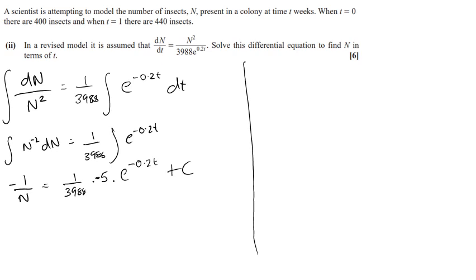The minus sign is important — because it's e^(−0.2t), differentiating back gives −0.2, which is −1/5, so we need to counteract that by multiplying by −5 outside. To find c, use t = 0 and n = 400 (the simpler initial condition). Substituting: −1/400 = (−5/3988)·e^0 + c, so −1/n = −5·e^(−0.2t)/3988 + c.